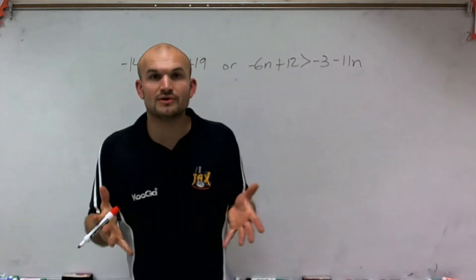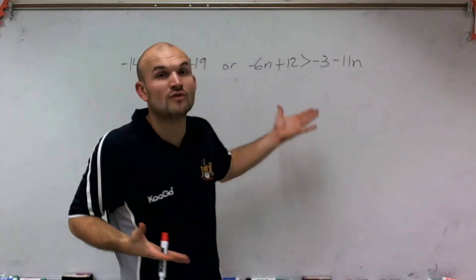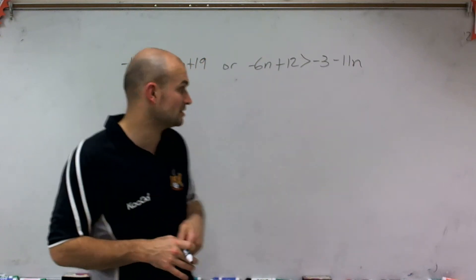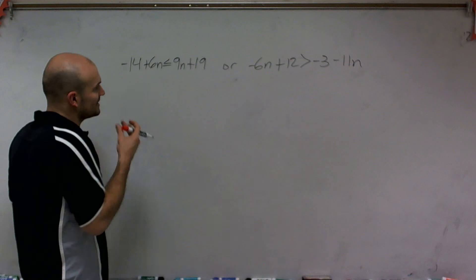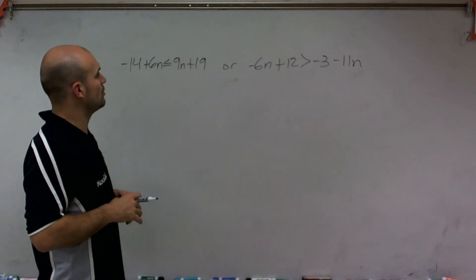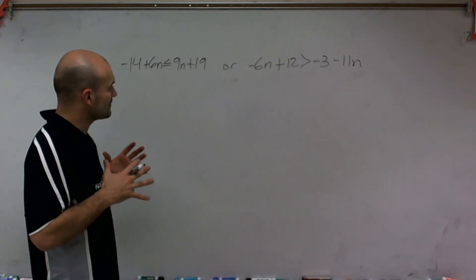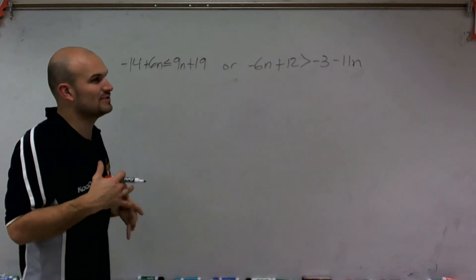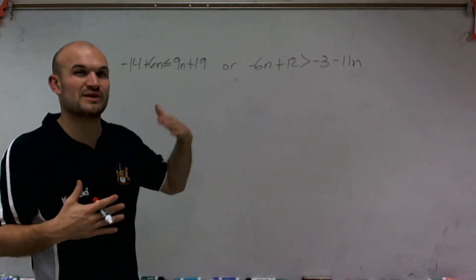So what we're going to do then is we just need to solve each inequality before we'll go into graphing them and see exactly what the solution set's going to look like. So what I like to do when I'm solving inequalities, I like to always solve for my variable on the left side. The reason being is because we always read from left to right.